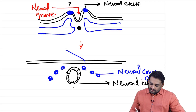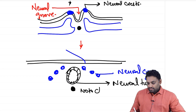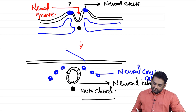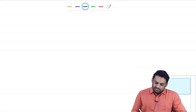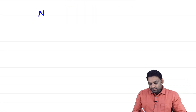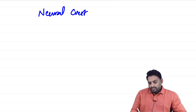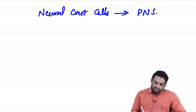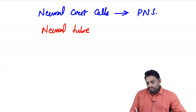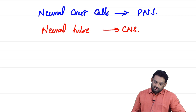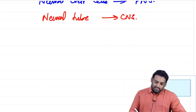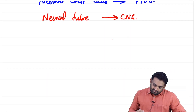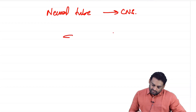Just below the neural tube, you also have the notochord, which is still present. In the future, the neural crest cells will form the peripheral nervous system (PNS), and the neural tube will form the central nervous system (CNS).